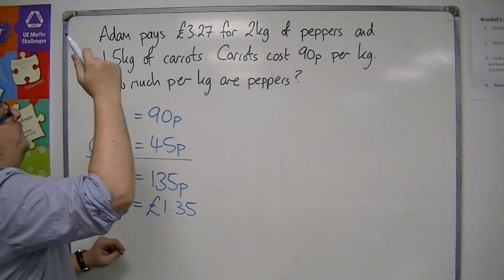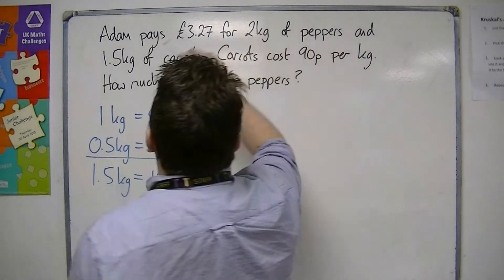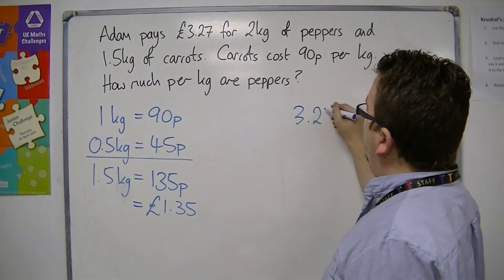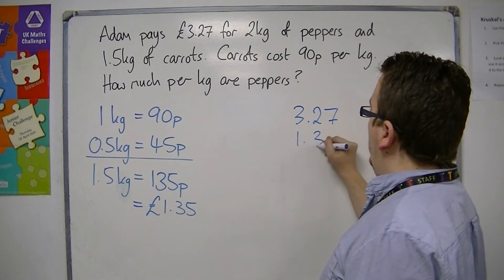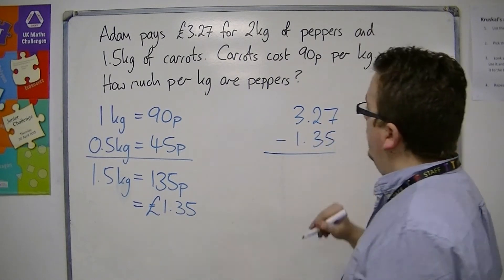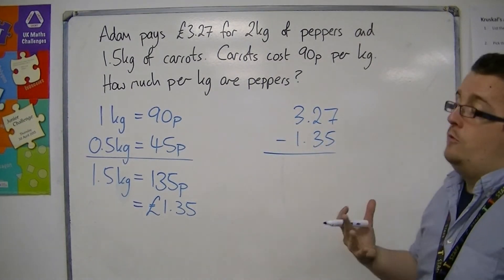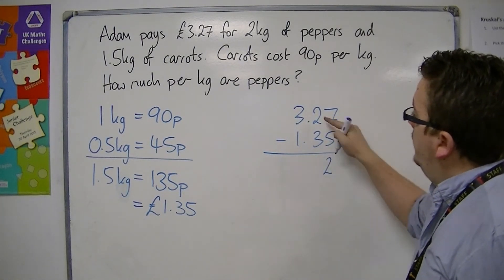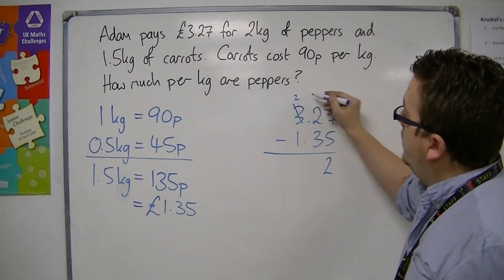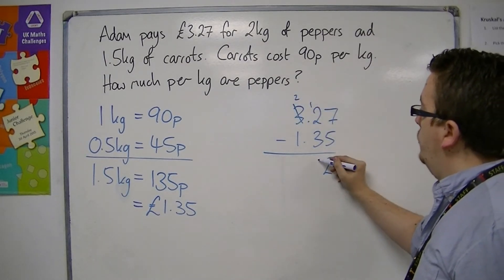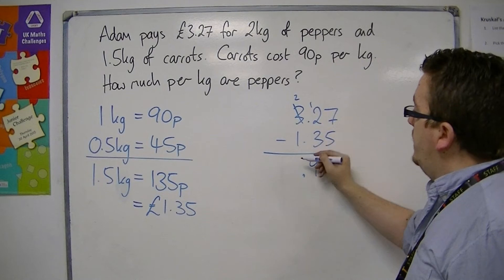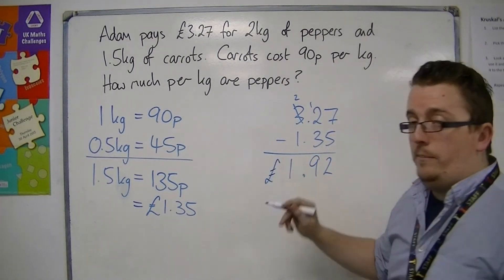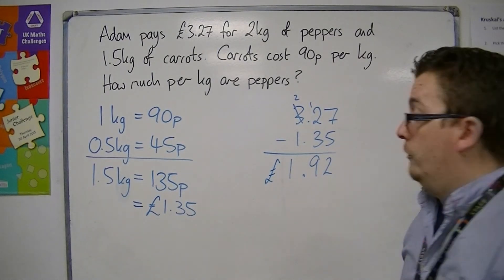We've got £3.27 being paid for the lot — both the peppers and the carrots. So if we do £3.27 take away £1.35, that should leave us with how much we've paid for the peppers alone. 7 take away 5 is 2. 2 take away 3 I can't do, so I borrow 1. 12 take away 3 is 9. 2 take away 1 is 1. So I've spent £1.92 on the peppers, and that's 2 kilos worth.